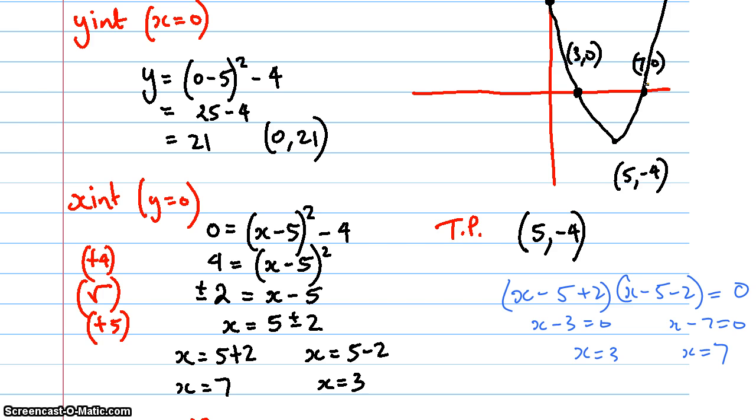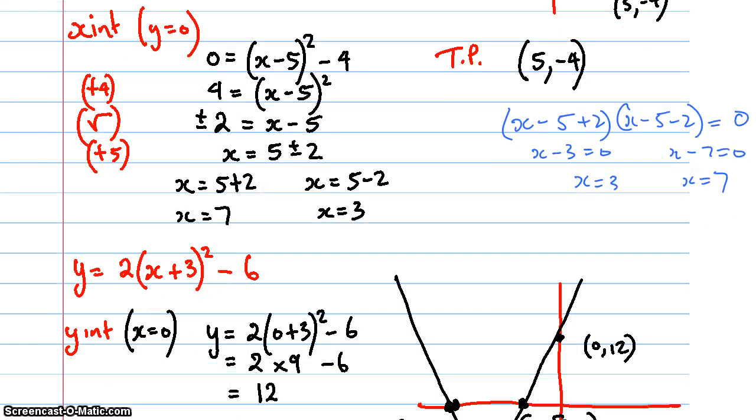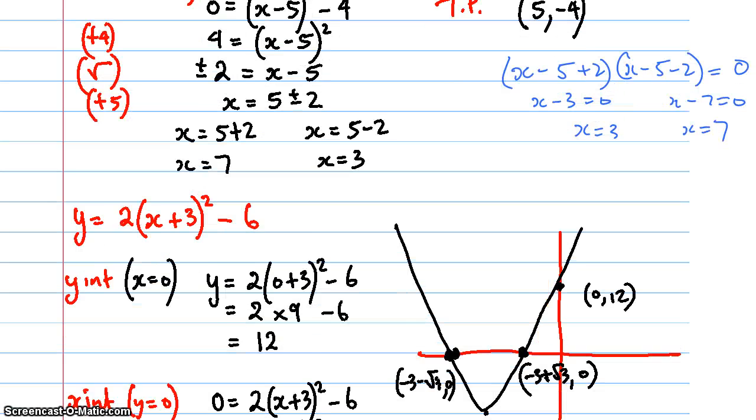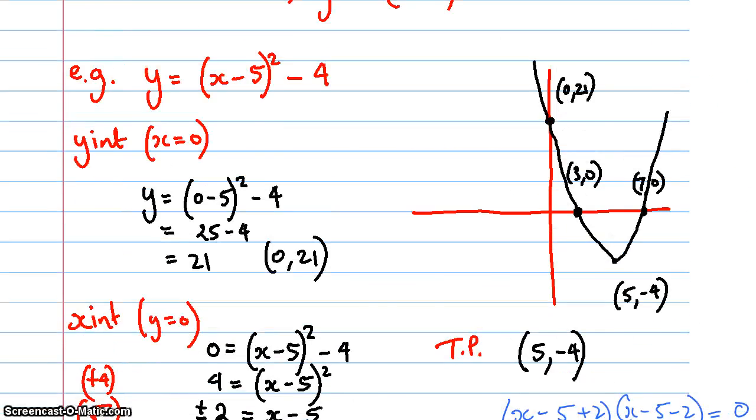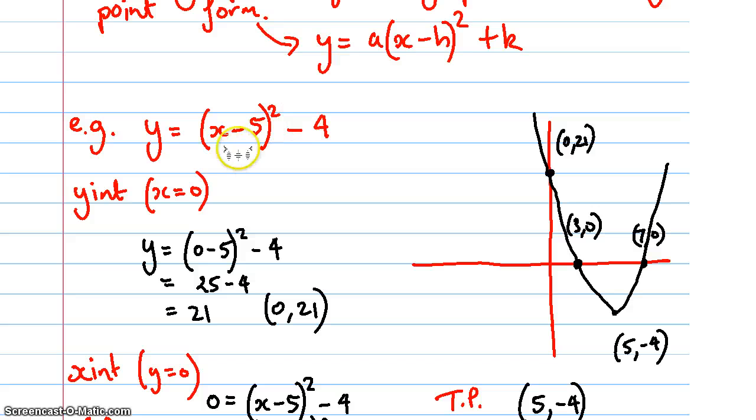The turning point is the last thing that we need to do. For these ones, the reason it's called the turning point form is because what I've got here in my equation, I've actually got the turning point there.